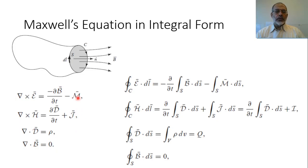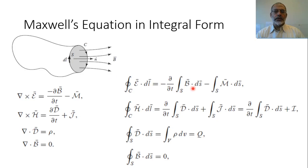This is the differential form of Maxwell's equations. The corresponding integral form assumes an arbitrary volume with a closed loop of length L and surface area S. The integral over a closed loop of the electric field equals minus the partial derivative with respect to time of the integral of the magnetic flux density dot dS over the surface enclosed by this loop — this is equivalent to minus the rate of change of the magnetic flux passing through the surface area.